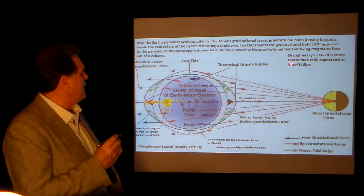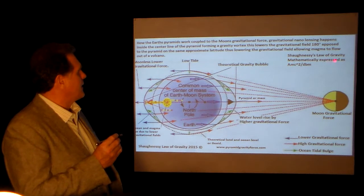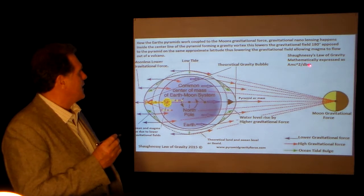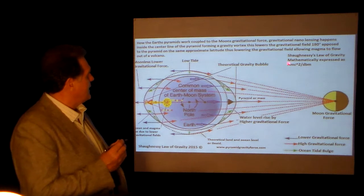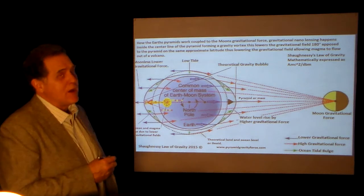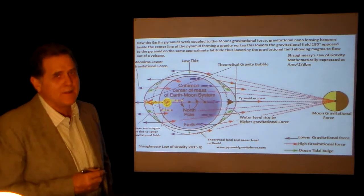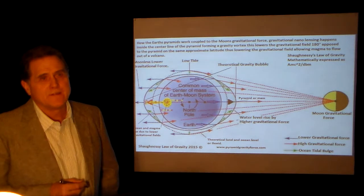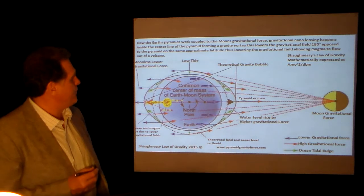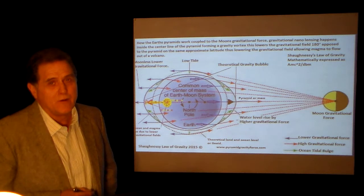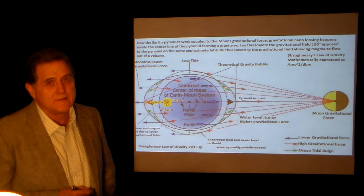Shansi's log gravity, mathematically expressed as AMC squared divided by dBm. Now, A is angle in radians — that's the angle of your pyramid. So this is zero radians, no multiplier. It's an index.